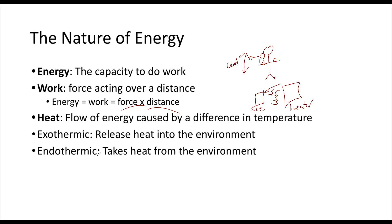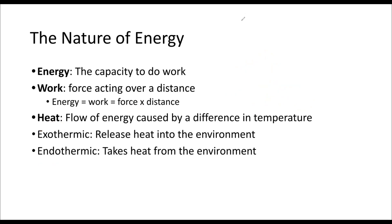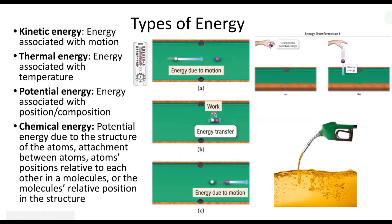When we talk about energy, we use specific terms: exothermic and endothermic. The system is the thing we are interested in studying — in my example, the system is the block of ice. If heat is being released into the environment, we call that exothermic. 'Exo' means exiting the system. However, in our example, heat is going from the heater into the ice, so it's going into the system — that's endothermic.